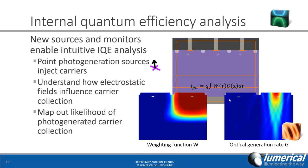For assessing the internal quantum efficiency of CMOS image sensors and photo detectors, new sources and monitors have been added to Device. This includes a new point photo generation source, which acts as a point source for charge carriers, allowing users to assess how electrostatic fields can influence the charge carrier collection at the terminals, and therefore map out the likelihood of photo-generated carrier collection.